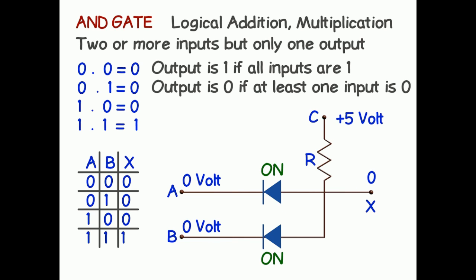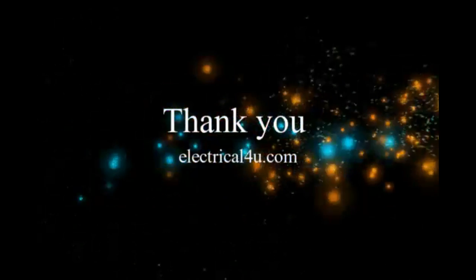The diodes at forward bias condition do not behave as ideal short circuit. Some voltage drop will be there across the forward bias diodes. This is equal to forward bias voltage of the diodes. This voltage drop will appear at X during low output condition. So practically low output will not be 0V, it is rather 0.6 to 0.7V which is ideally considered as 0V.